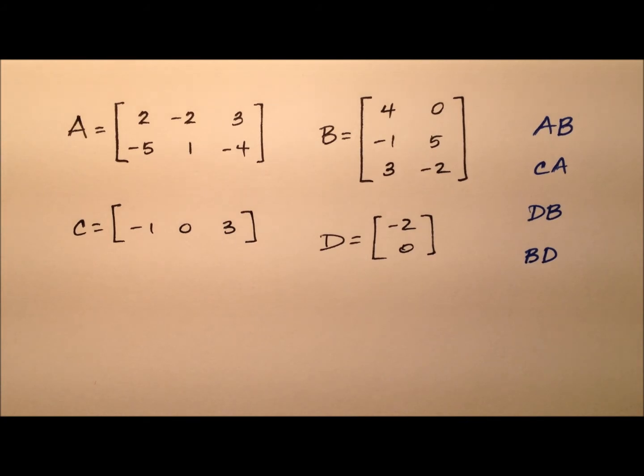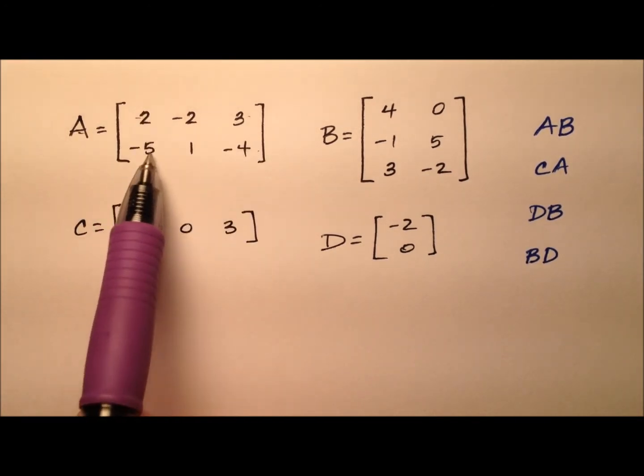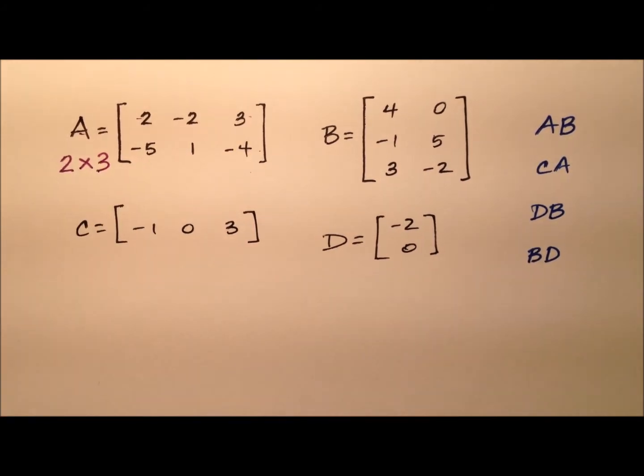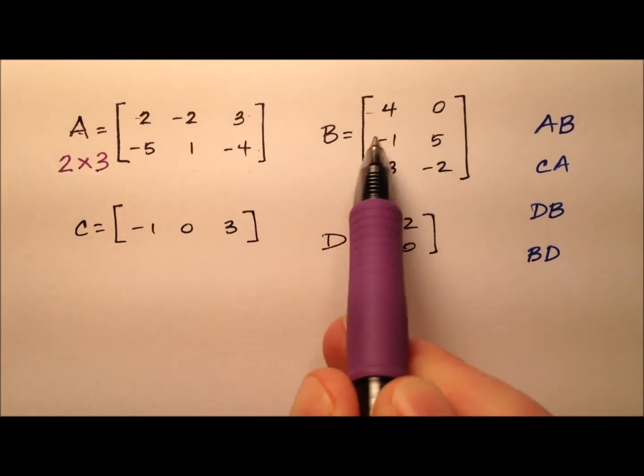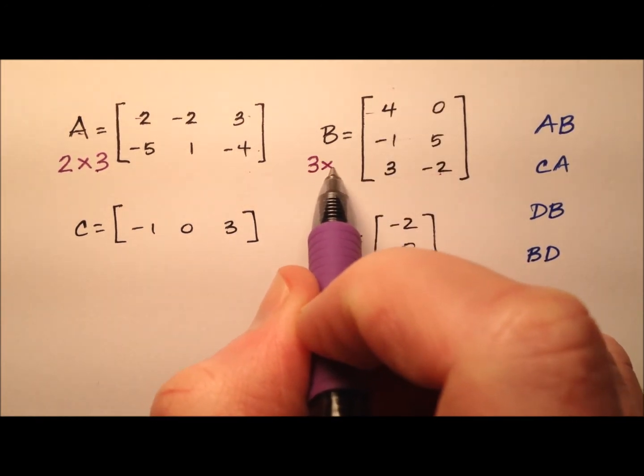So let's go ahead and start by finding the dimensions of each of these four matrices here. For A, it looks like we have two rows and three columns, so we're going to say A is a 2 by 3. For B, it looks like we have three rows and two columns, so that should be a 3 by 2.